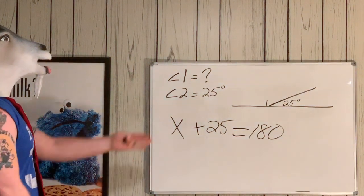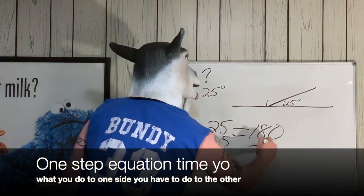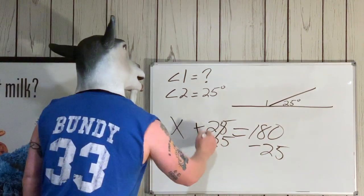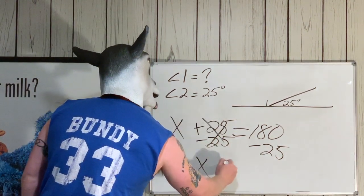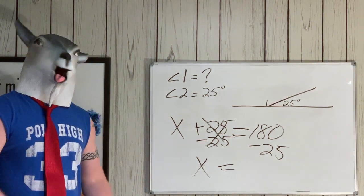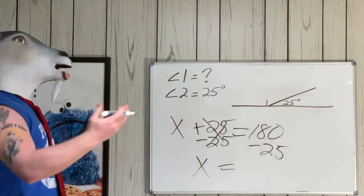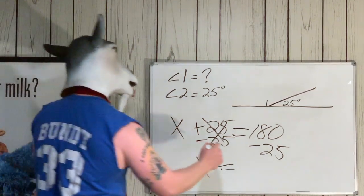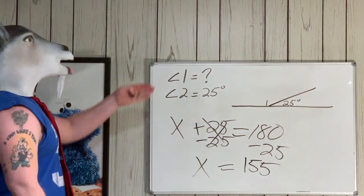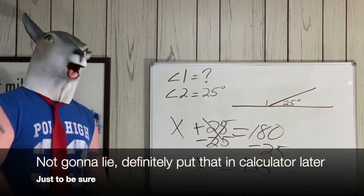Now all we gotta do is subtract 25 from both sides. Boom here, and boom here. On the left hand side, they cancel out, we bring down our X. On this side we got 180 minus 25. Let's do that real quick in our head: 180 minus 25, boom, that's 155. Bada bing bada boom, our missing angle is 155 and we're done, baby. How easy is that?